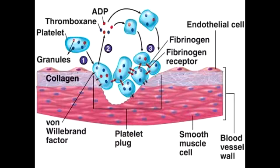What is von Willebrand disease? Von Willebrand disease is the deficiency of von Willebrand factor. So if there is a deficiency of von Willebrand factor, the adhesion of glycoprotein 1B to that von Willebrand factor will not occur because there is no von Willebrand factor.